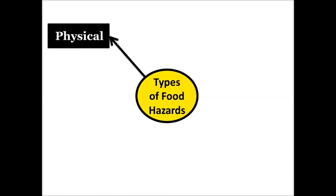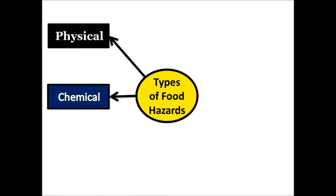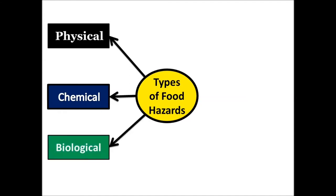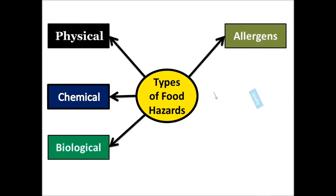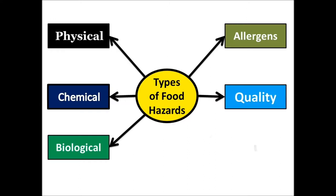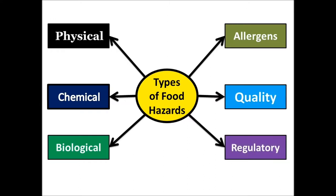Now, what are the types of food hazards? The first type is the physical hazard, then chemical hazard, biological hazard, allergens, quality hazard, and regulatory hazard. There are six types of food hazards — there is no hazard recently discovered outside of these six types. Later on Simply Foodia, we will explain each hazard in detail.